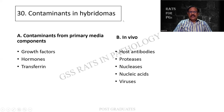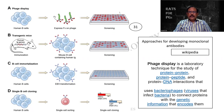What are the contaminants in a hybridoma? They can be from the primary media itself - growth factors, hormones - or in vivo within the tissue. There can be host antibodies, proteases, nucleases, nucleic acids, and viruses. So these can be contaminants. How do you develop a monoclonal antibody? It can be through phage display, transgenic mice, B-cell immortalization, and single B-cell cloning. These four methods I would like you people to kindly mention in your answers.